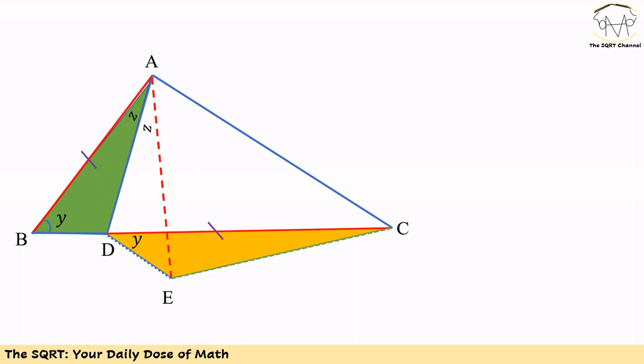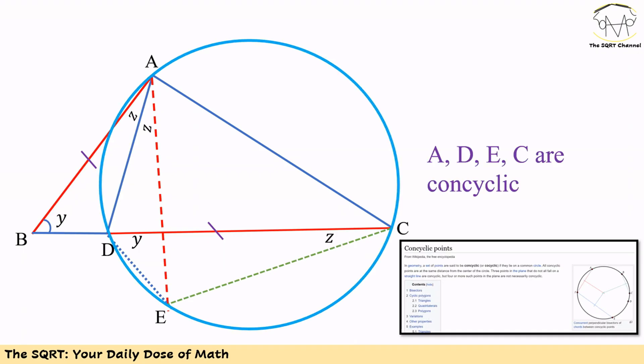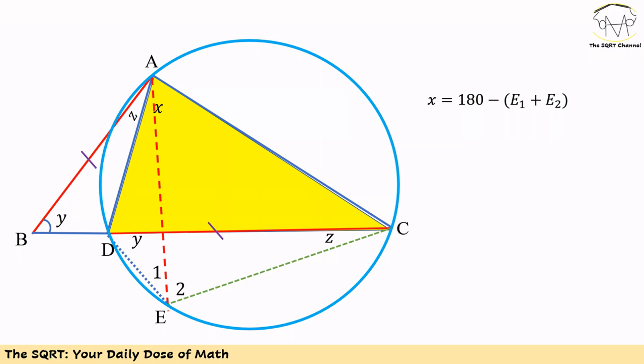We can now see that points A, D, E, and C are concyclic — they lie on the same circle. Focusing on angle X, we can say X equals 180° minus the sum of angles E1 and E2. Since E1 plus E2 equals D1, we have X equals 180° minus D1.